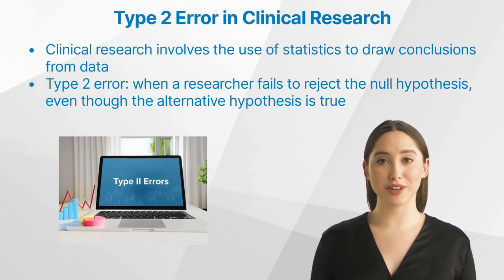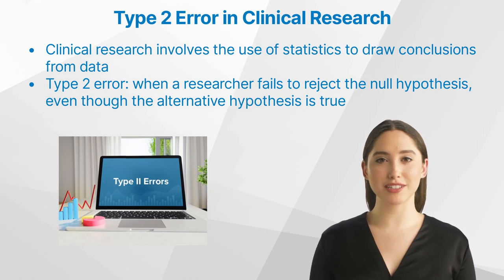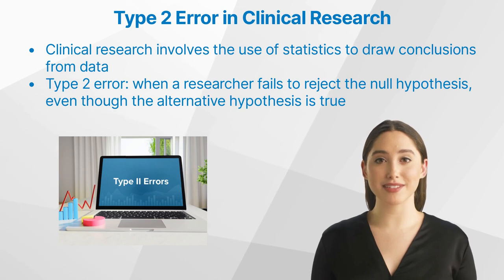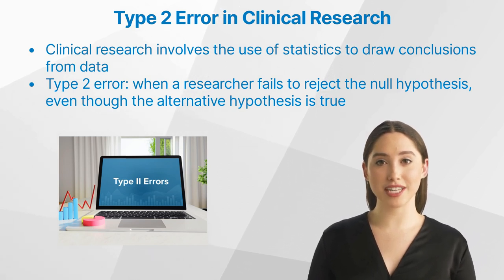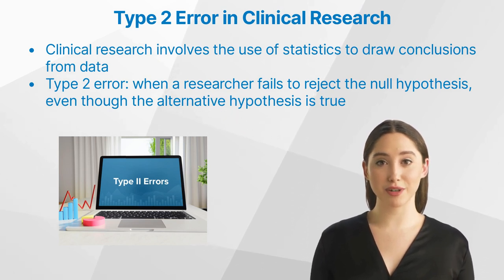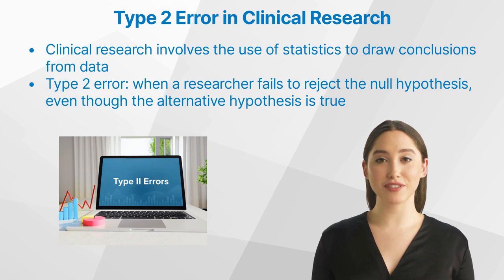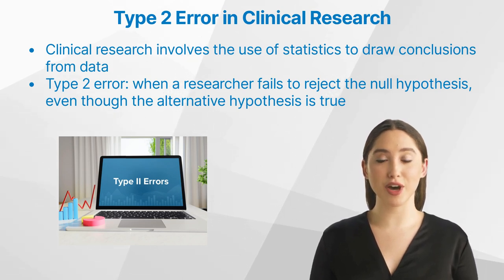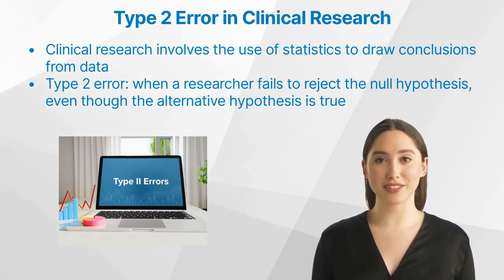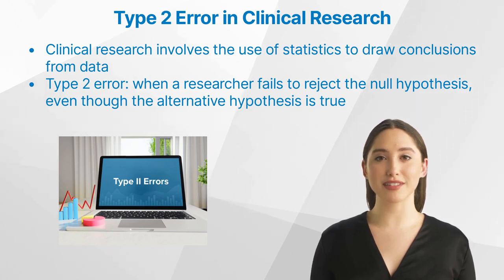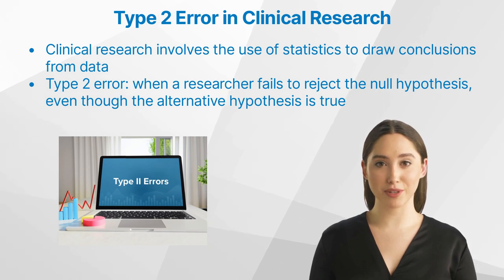What is Type 2 error in clinical research? Clinical research involves the use of statistics to draw conclusions from data. Statistical tests are used to determine whether the observed differences between groups or treatments are likely due to chance or due to the effects of the intervention being studied. However, there is always a risk of making a Type 2 error, which occurs when a researcher fails to reject the null hypothesis even though the alternative hypothesis is true.